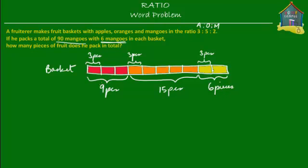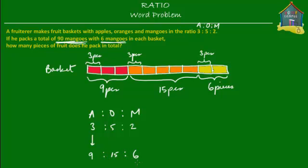Now what we have to find out is how many pieces of fruit did he pack in total? In total, he actually packed 90 mangoes. The apples, oranges, and mangoes are in the ratio 3 to 5 to 2. Each basket has got three sets of apples, five sets of oranges, and two sets of mangoes. And from this, we found out that each basket has got nine apples, 15 oranges, and six mangoes. What we essentially did was multiply all the terms by three.